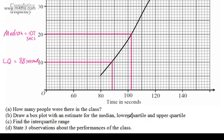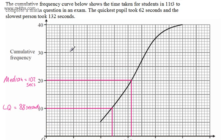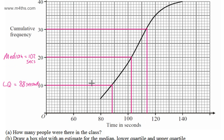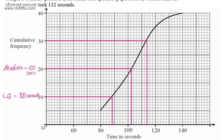Now for the upper quartile: we split the data set and take a reading at three quarters of the way along, which gives us 30. Reading across and dropping the perpendicular down, we can see that gives about 114. So the upper quartile is going to be approximately 114 seconds.